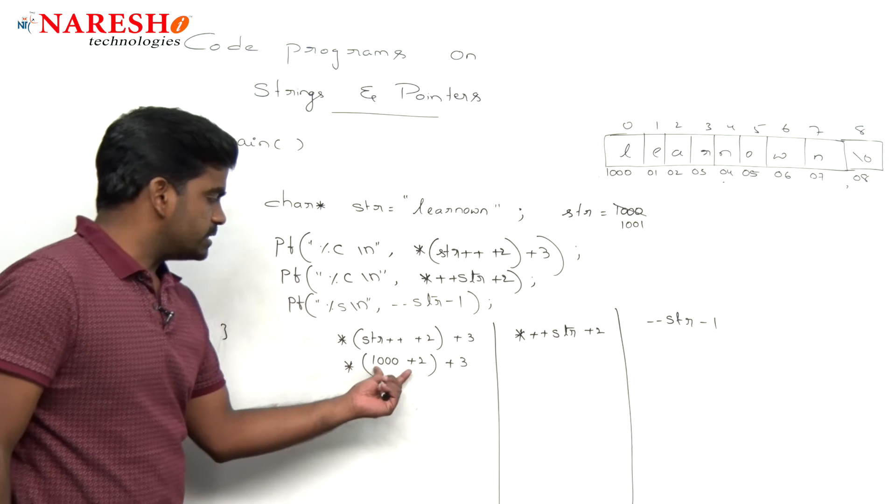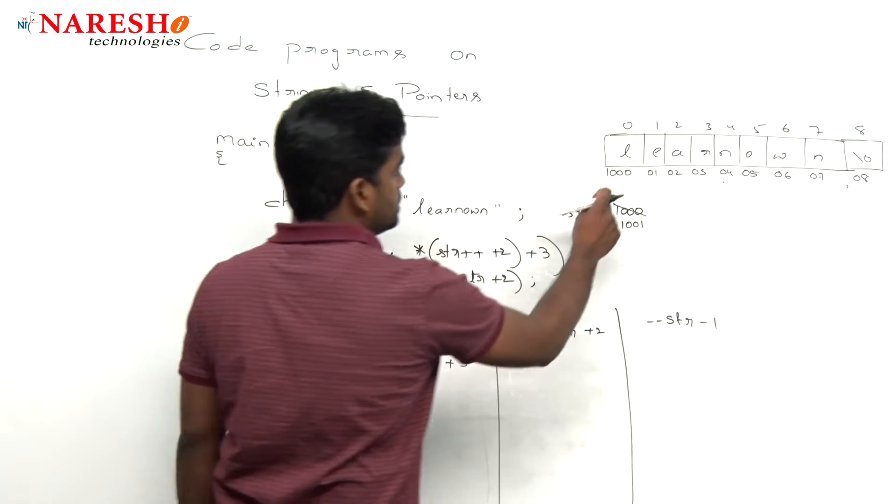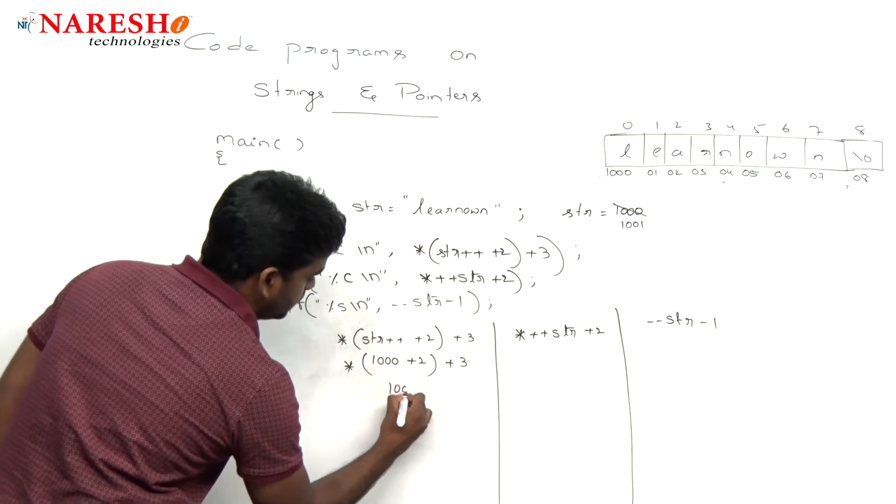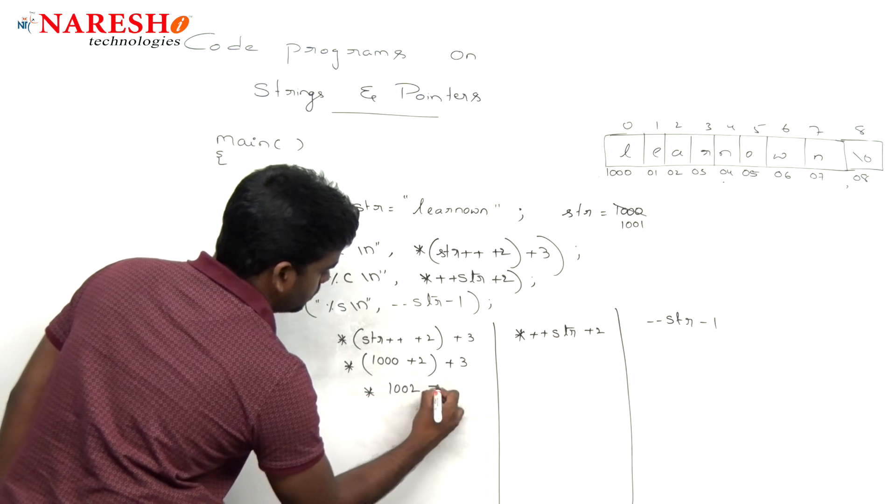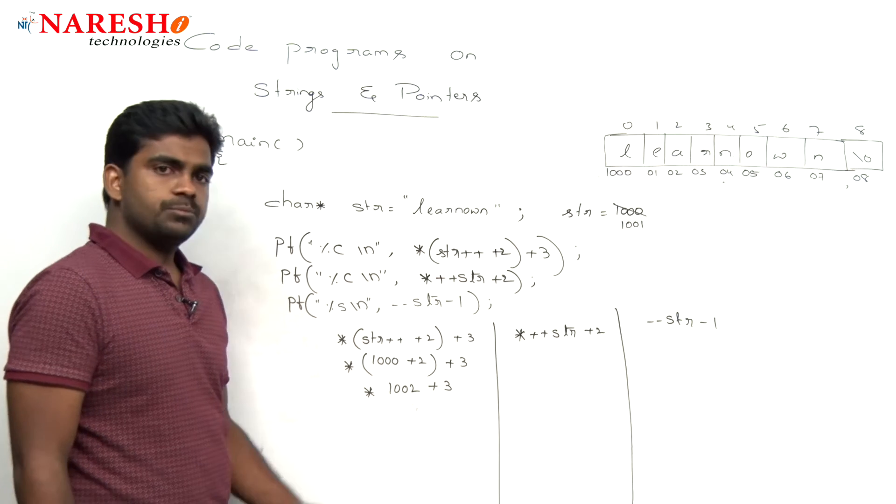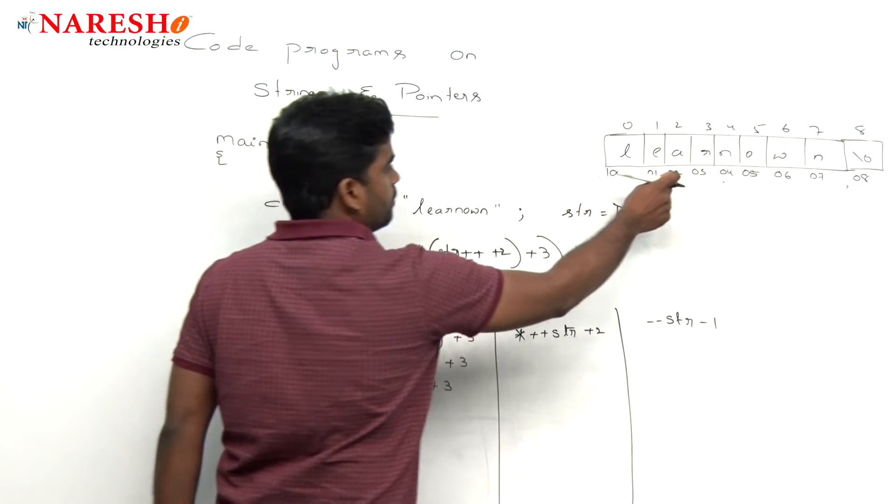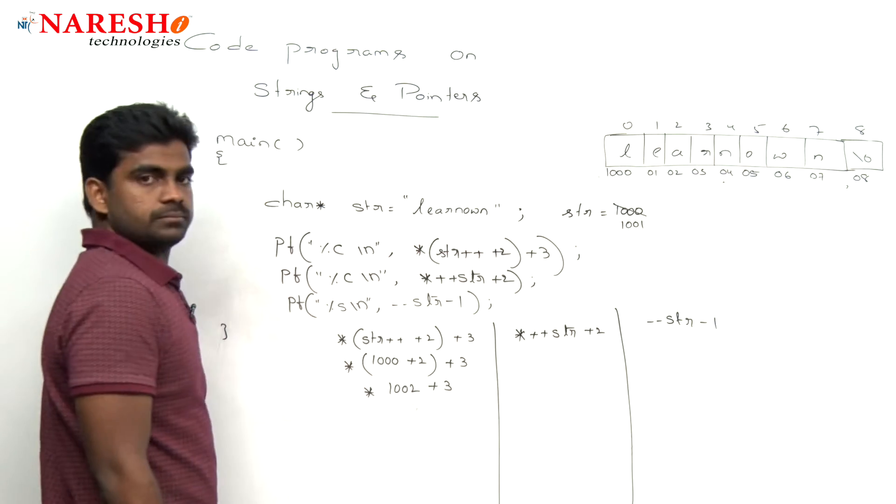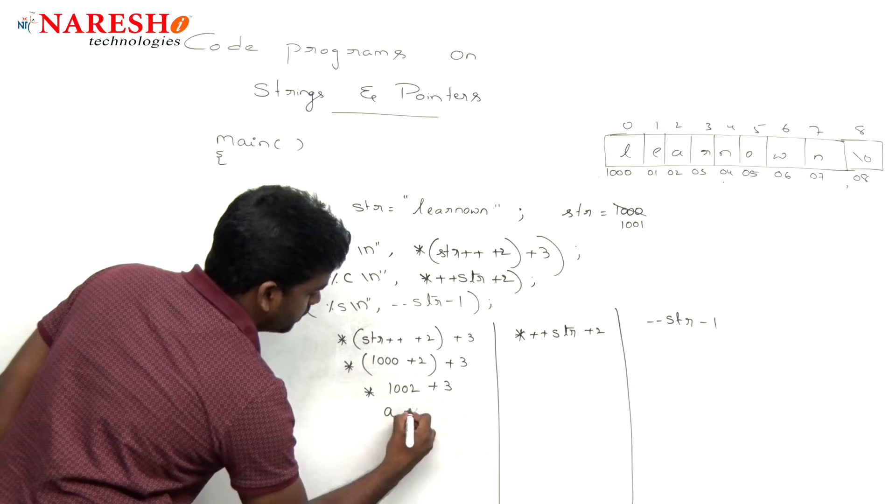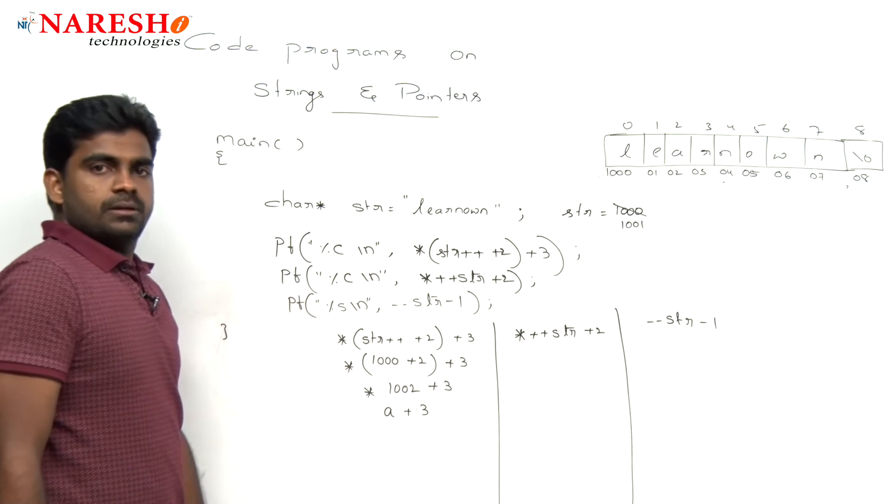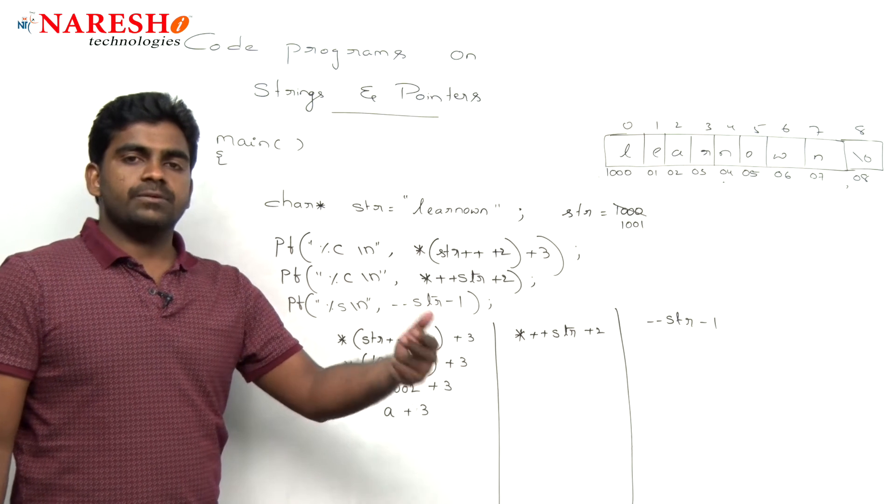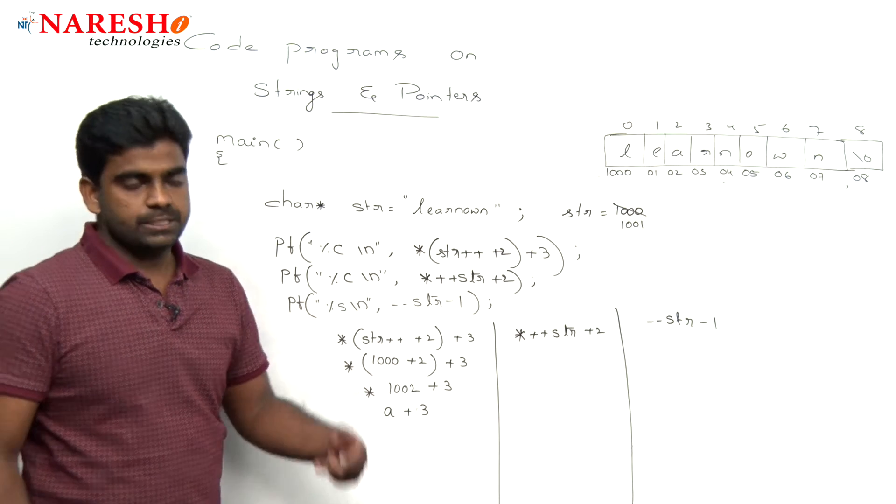Pointer plus 3. Here it is what? Thousand plus 2. Here it is thousand and 2. Pointer to thousand and 2 plus 3. What is that pointer to thousand and 2? Value is a, value is a plus 3. So a plus 3 means what?